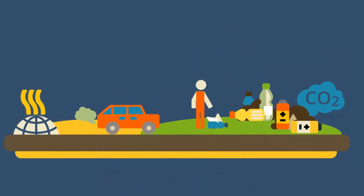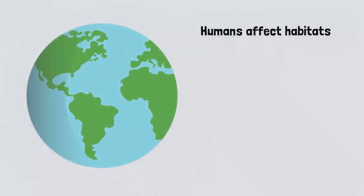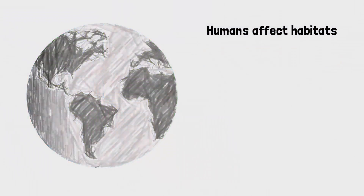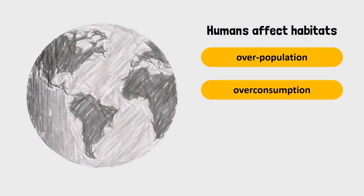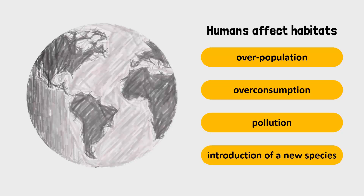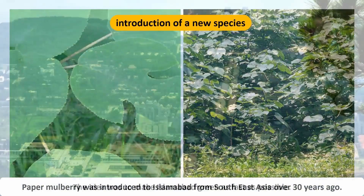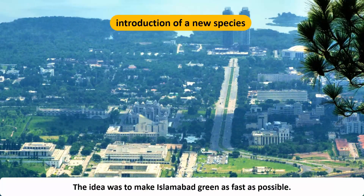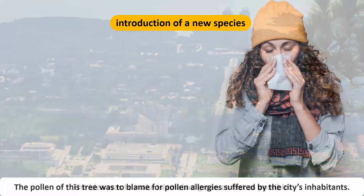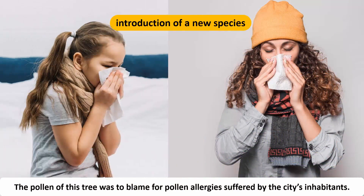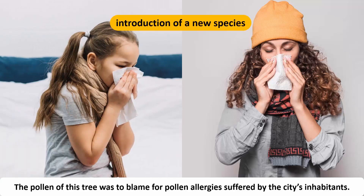Humans also play a huge role in affecting habitats. Some activities that cause damage to the environment include overpopulation, overconsumption, pollution, or even the introduction of new species. For example, Paper Mulberry was introduced to Islamabad from Southeast Asia over 30 years ago. The idea behind bringing in this alien species was to make Islamabad green as fast as possible. However, it soon became clear that the pollen of this tree was to blame for pollen allergies suffered by the city's inhabitants.